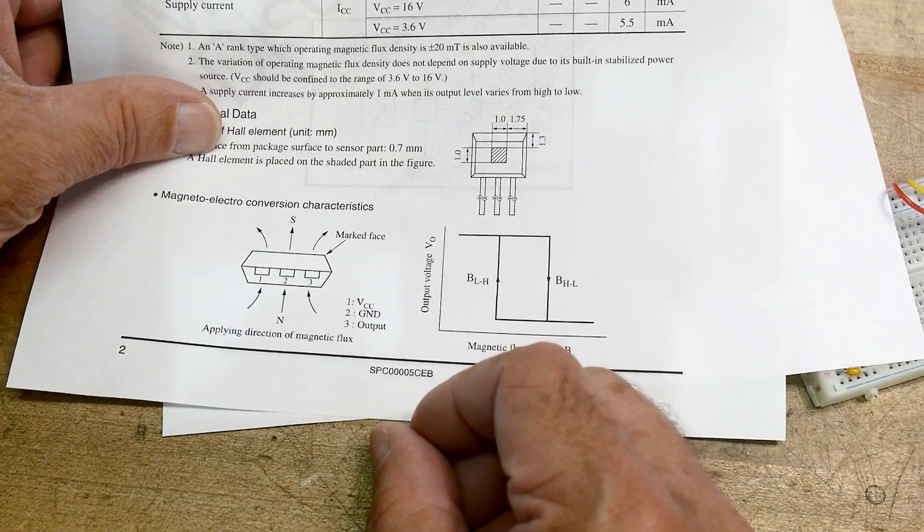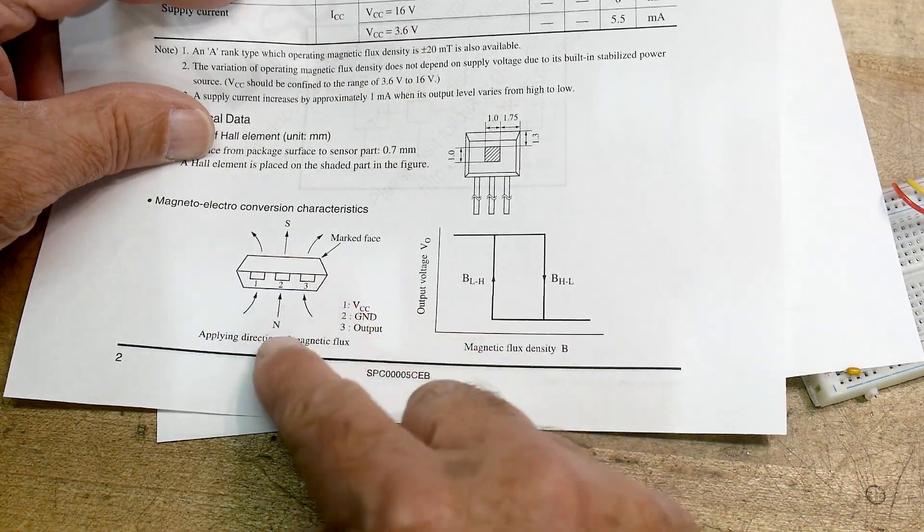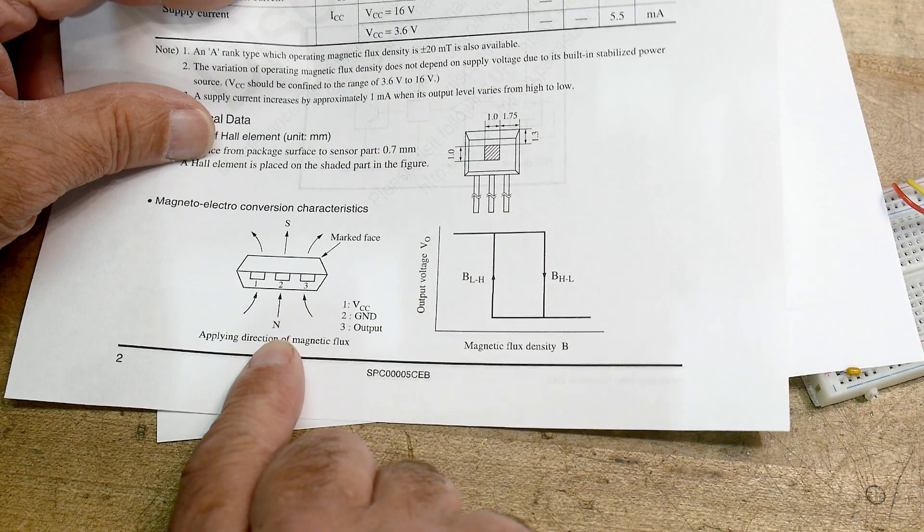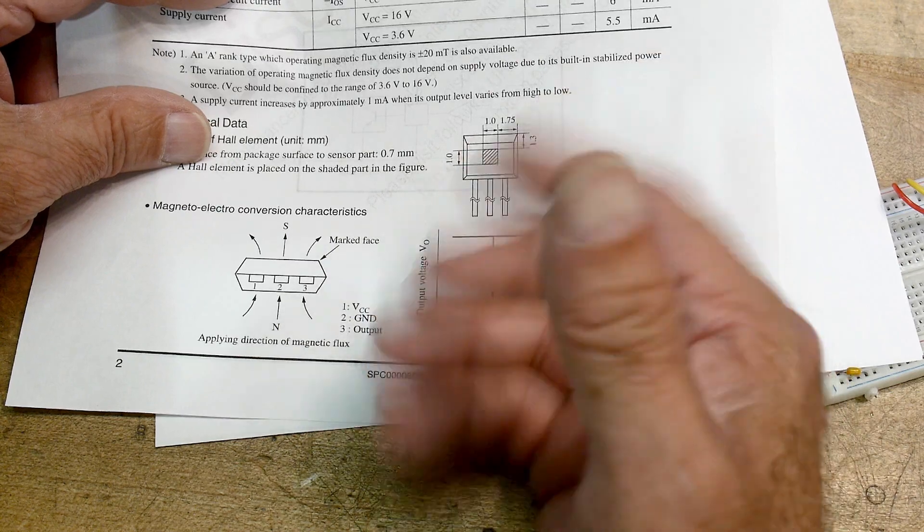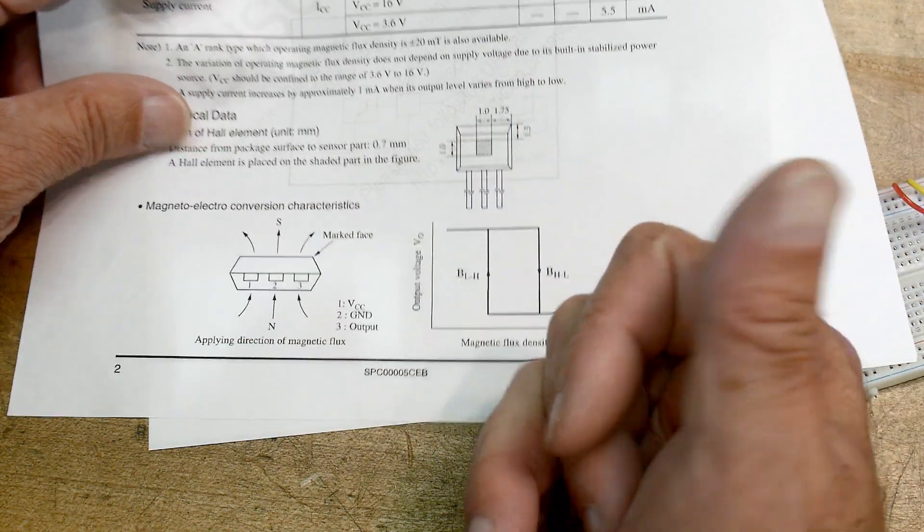There's a drawing here that's kind of what you need to know. The north pole comes in this way, south pole comes out that way. It's going to detect the magnetic field and then it will toggle depending on the magnetic field.